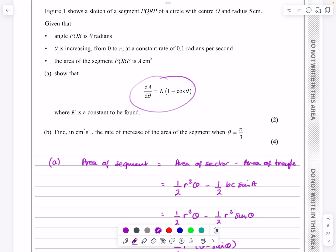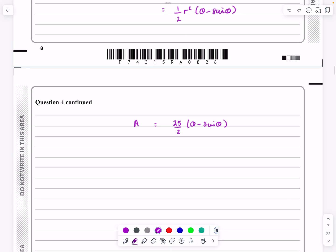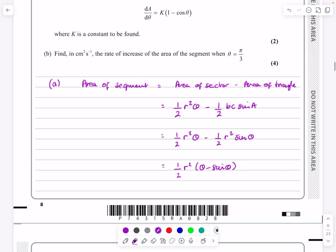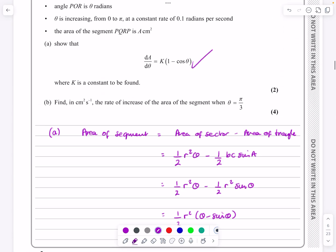and now what I've got to do is differentiate that to get dA by dθ. So if I'm going to do that, differentiating 25 over 2, the differential of theta is 1, and the differential of sine is cos. So we end up with 25 over 2 times 1 minus cos theta, and so that's in the correct format for exactly what we wanted there.